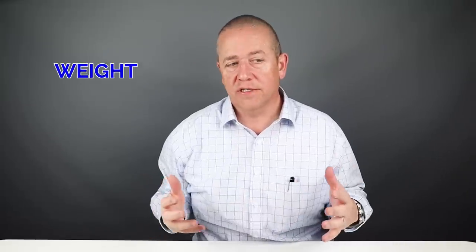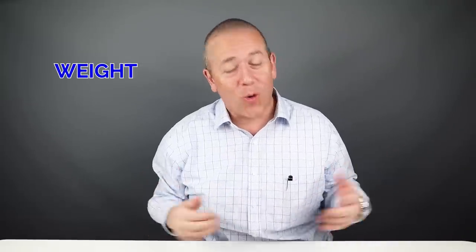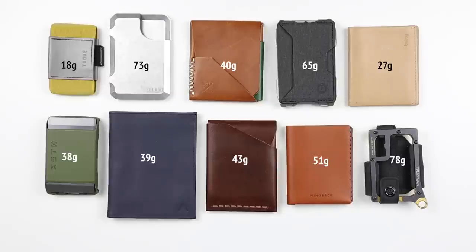Now let's look at the weight of each of these because some of these are light, some aren't quite so much. The Trove Swift, 18 grams, Hellbent, 73, Dango, 65, the Bellroy Slim Sleeve, 27. They're really kind of all over the map, but obviously if there's metal involved, it makes it quite heavy. All of these wallets provide their own size and weight comparisons that help you understand what might be appropriate for you.